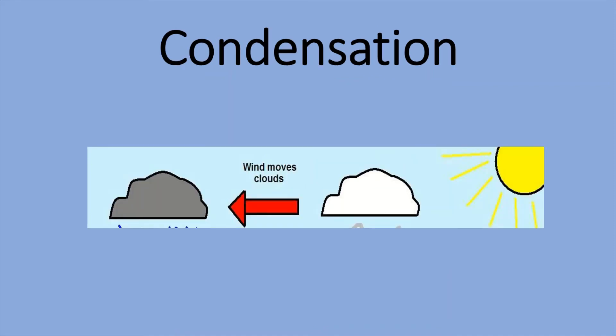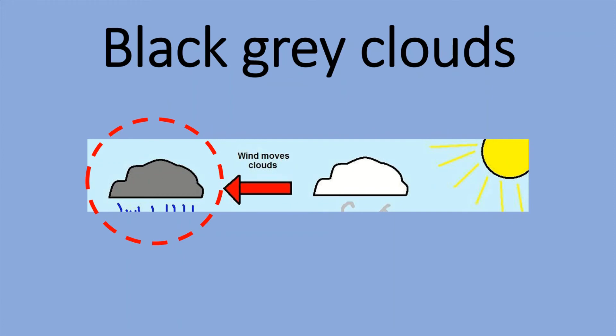Then the water vapor gets condensed as it is a gas. It gets condensed into liquid and forms clouds. This process is called condensation, where gas changes into liquid, just opposite to evaporation. The clouds you have seen in rainy season are condensed clouds containing a large amount of water.